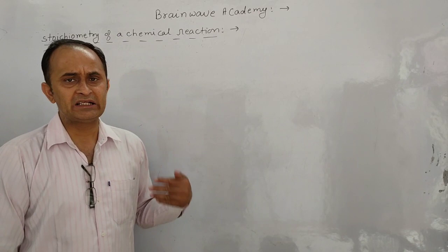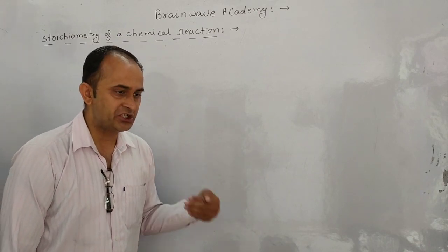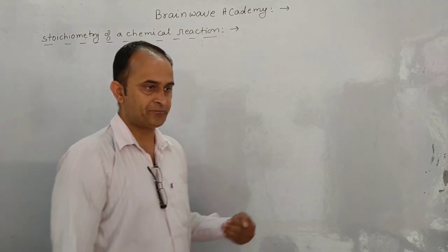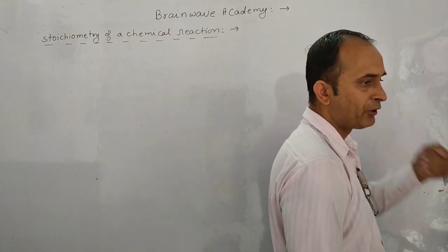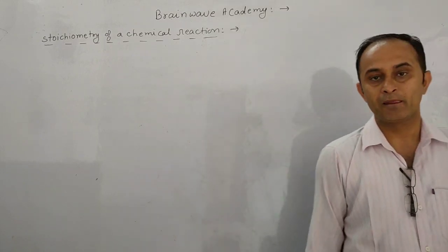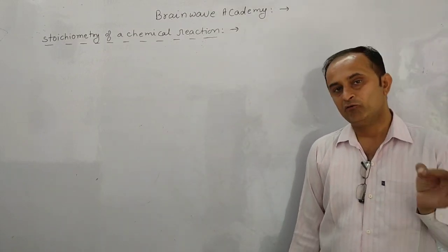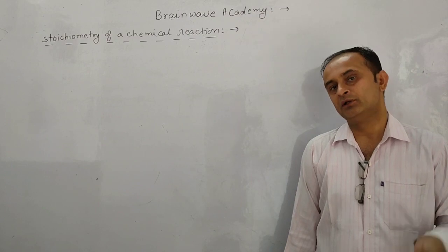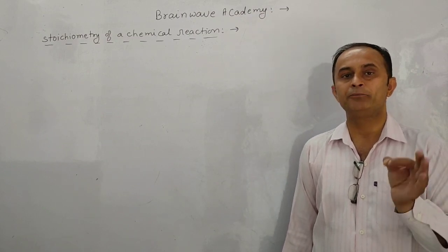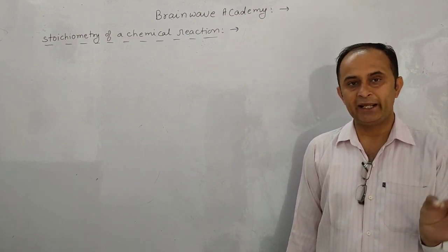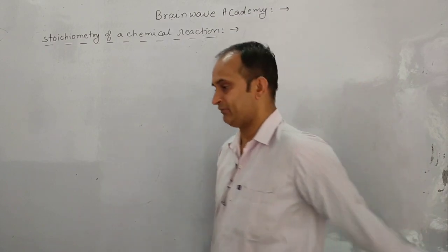Stoichiometry is the relationship between different reactants and products in terms of mass, volume, and number of moles in a balanced chemical equation.